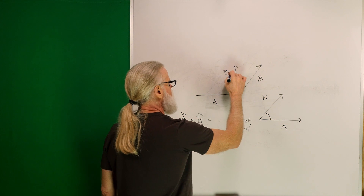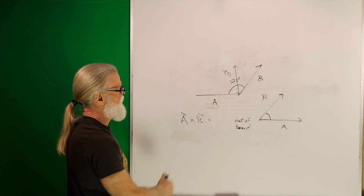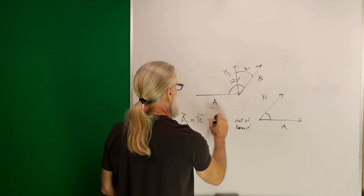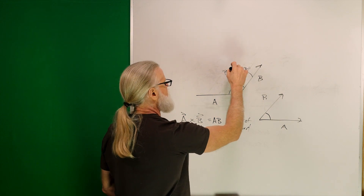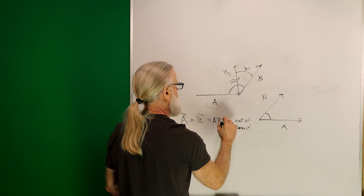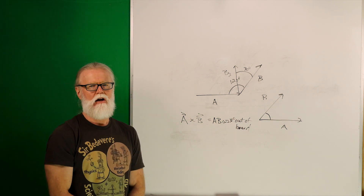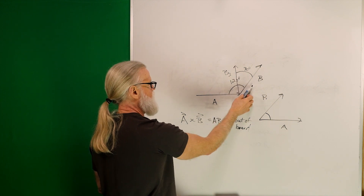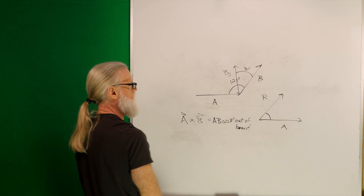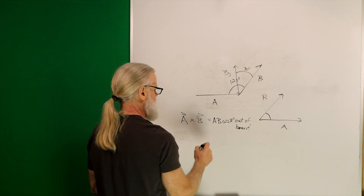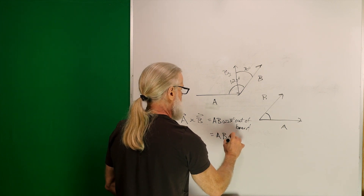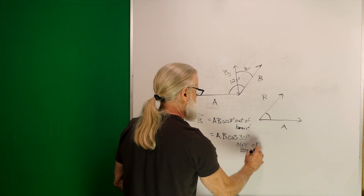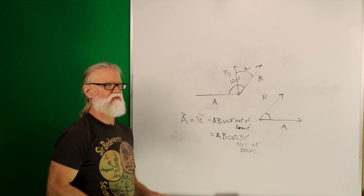Now for the magnitude: since there's 120 degrees between A and B, the remaining angle in the right triangle is 30 degrees. The perpendicular component B-perpendicular equals B cosine 30 degrees. So the magnitude of A cross B is |A| times |B| cosine 30 degrees — meaning A times B times cosine of 30 degrees, and the direction is out of the board.